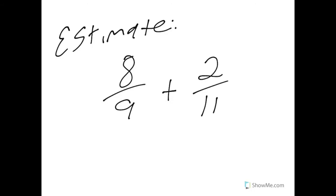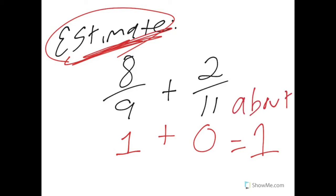Let's check this out. Estimating, and notice that it does tell us to estimate: 8/9 plus 2/11. Well, I know 8/9, that's pretty close to one whole. If I had a pizza that was cut into 9 slices and there was one slice eaten, I have 8 out of the 9 slices remaining. That's still pretty close to one whole pizza. 2/11, pretty much zero. Now it's not exactly zero, but we're estimating. It doesn't have to be exact. So 1 plus 0 is of course 1. I know that 8/9 plus 2/11 is about one.